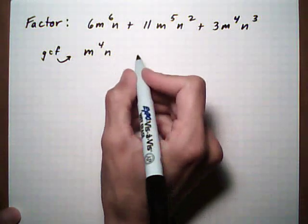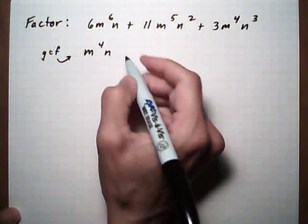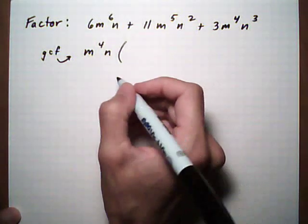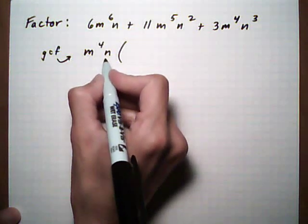There are four m's at least everywhere, so let's pull out four m's. And for the m's, we can only pull out one because that's all this one has. Leftovers go in parentheses. So that's our GCF right there, m to the fourth n.